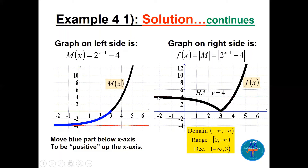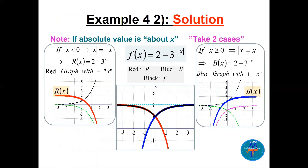The final graph of |M(x)| has a horizontal asymptote at y = 4. The x-intercept at (3, 0) stays in place. The domain is all real numbers, the range is [0, ∞), and the function is decreasing on (-∞, 3) and increasing on (3, ∞).